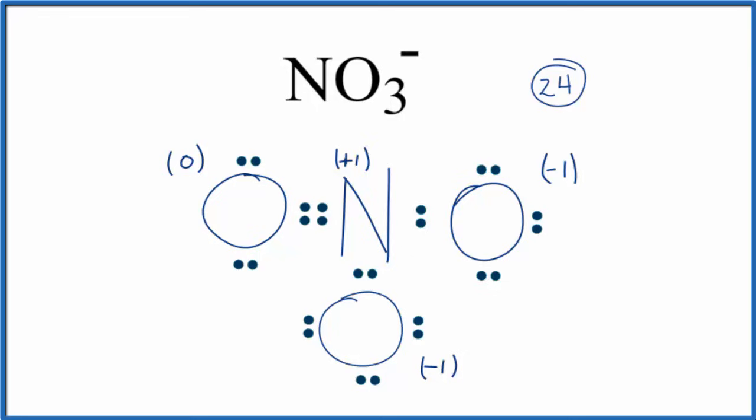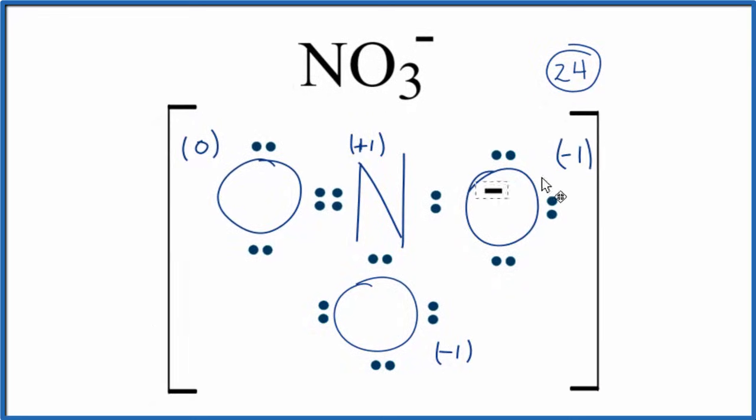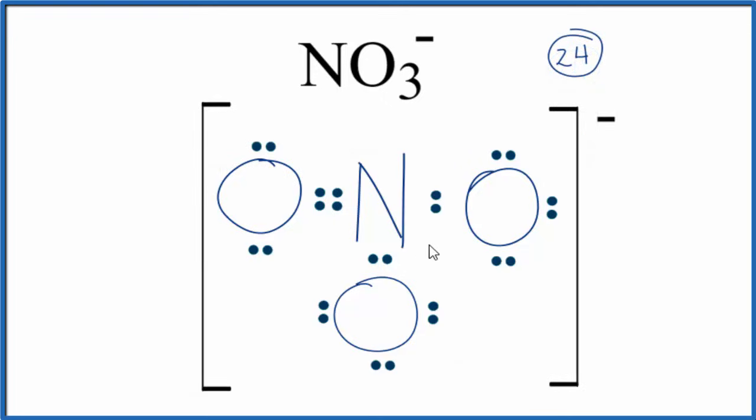We do need to put brackets around this since it's an ion, then put a negative charge out here. Let's remove our formal charges. So this is our Lewis structure for the nitrate ion. Note we've used all 24 valence electrons.